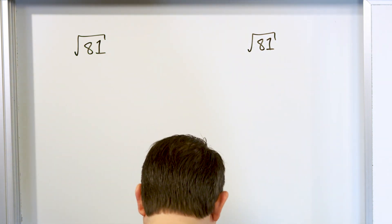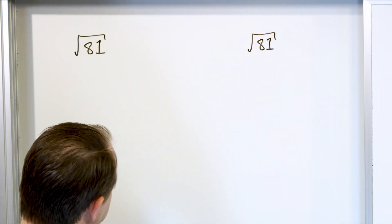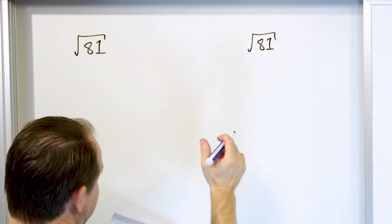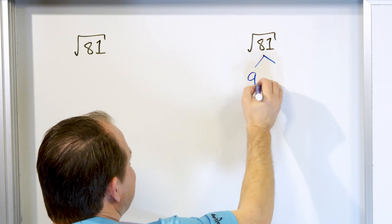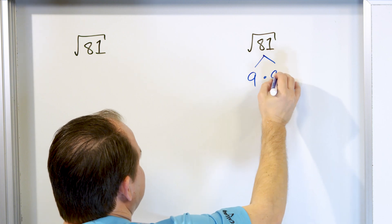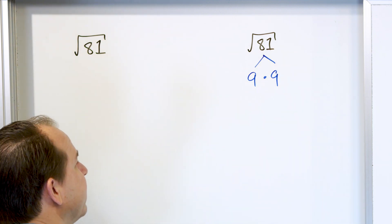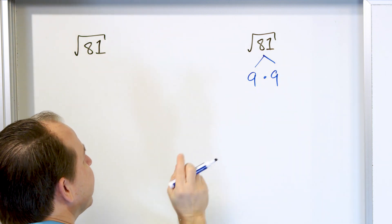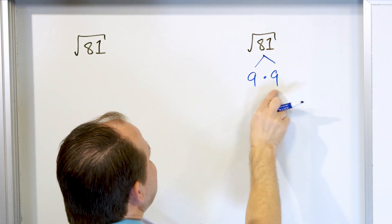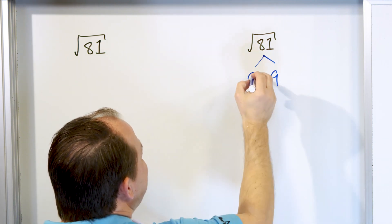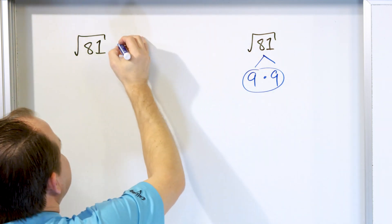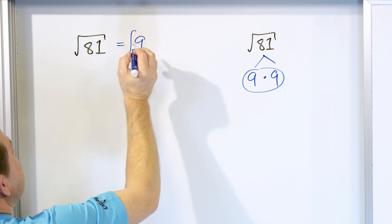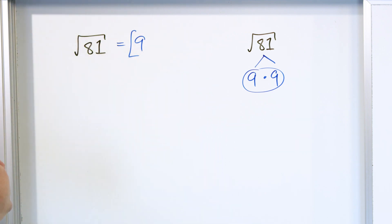You ask yourself: what times what is equal to 81? You might come up with something different, but I remember that 9 times 9 is 81. I'm looking for pairs of numbers, and I immediately see the only thing on this tree is a pair of 9s. So I pull out that 9 and say the answer is 9. 9 times 9 is 81.